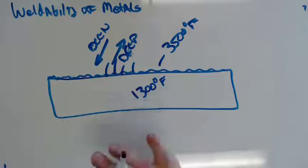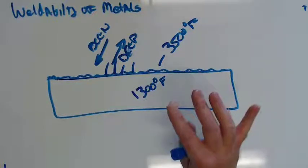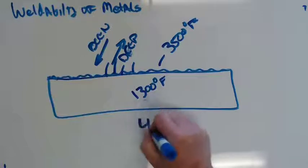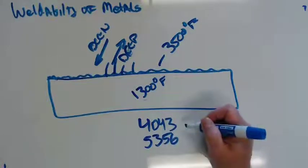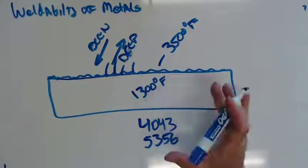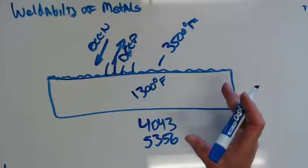The easy thing about aluminum is there's like two fillers that work for 90% of the aluminum you ever run into. And that's 4043 and 5356. Those are the two fillers that work pretty much all of the aluminum. Have both of it on hand and you'll be able to do pretty much anything.